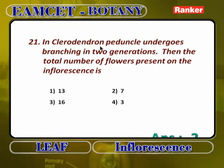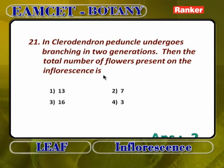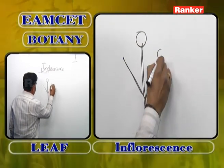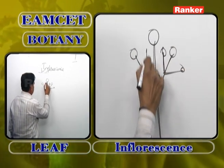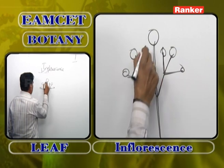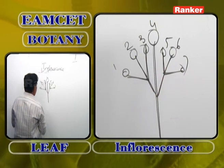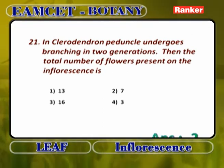In clerodendron, peduncle undergoes branching in two generations. Clerodendron shows dichasial cyme. The peduncle grows, ends as a flower. From the lower side, first generation produces two flowers. Second generation also produces two flowers on each side. Total flowers: 1 (main) + 2 (first gen) + 4 (second gen) = 7 flowers. So in a clerodendron dichasial cyme with two generations, seven flowers are present.